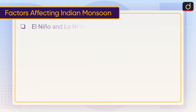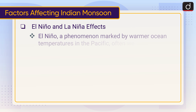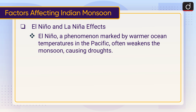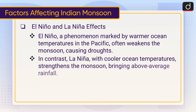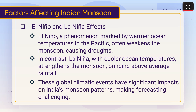El Niño and La Niña also affect the monsoon. El Niño, a phenomenon marked by warmer ocean temperatures in the Pacific, often weakens the monsoon, causing droughts. In contrast, La Niña, with cooler ocean temperatures, strengthens the monsoon, bringing above-average rainfall. These global climatic events have significant impacts on India's monsoon patterns, making forecasting challenging.